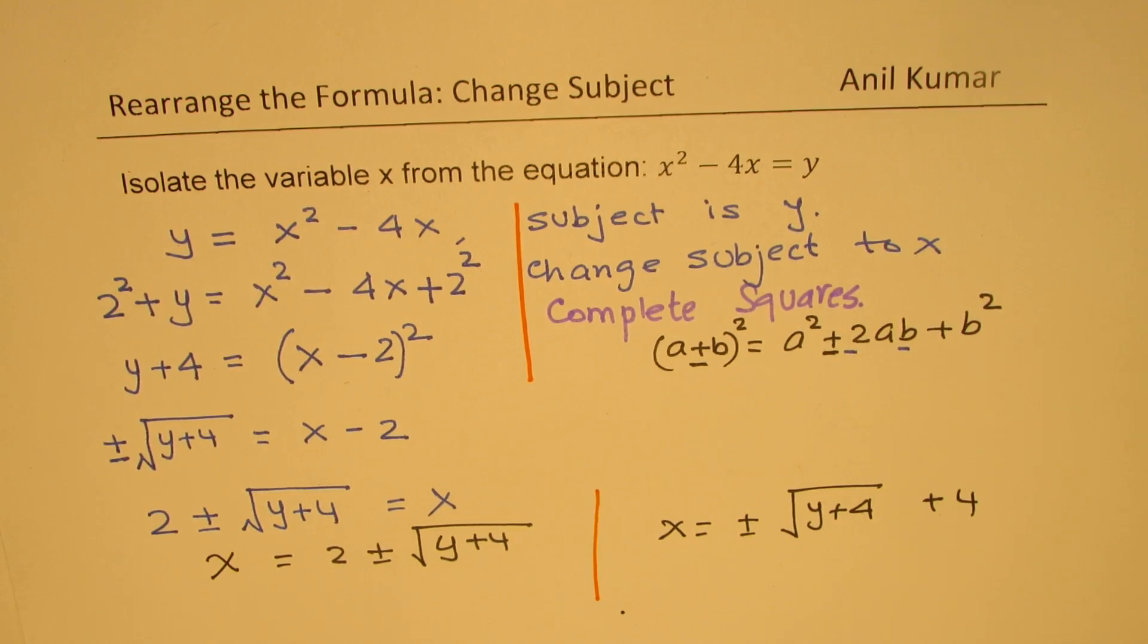Whenever a quadratic equation is there, remember to complete the squares and then isolate the variable to make it as a subject as shown in this particular example. In my playlist, you will find some strategies like cross multiplication, working with fractions and ratios, and also reverse operation. We did kind of reverse operation. Reverse of square is square root, and reverse of minus 2 was plus 2. So we did the reverse operation to change the subject or isolate the variable.